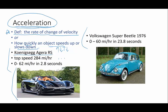By contrast, I don't guarantee this is the slowest accelerating car in the world, but I tried to find one that was kind of slow. This is a 1976 Volkswagen Super Beetle, 0 to 60 miles an hour, 23.8 seconds.